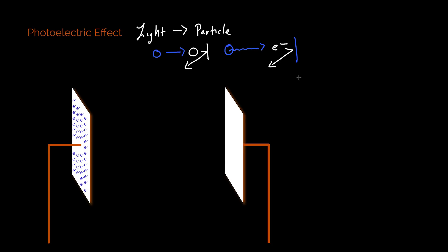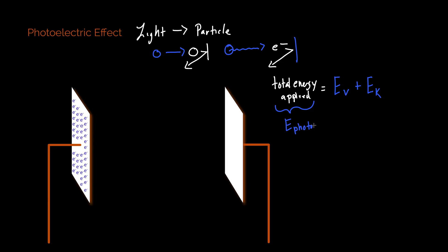One of the things I really like about the photoelectric effect is that it is simply a restatement of the conservation of energy. In order to really understand it, you have to first buy into this idea that the total energy applied is equal to the potential energy, which I'm going to write as an EV, plus the kinetic energy. The energy of the incident light, or the energy of a photon, equals the potential energy plus the kinetic energy, and this all applies to the electrons.